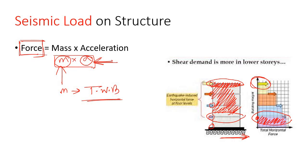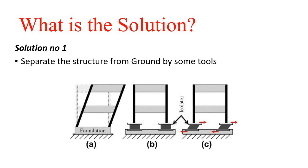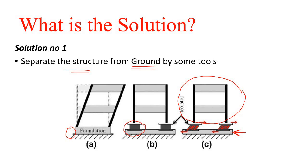Now what is the solution? Every problem is created from the ground — the ground is the source of all the problem. So the very first solution is to simply separate the structure from the ground. This can be done by installing elastomeric bearings. Once the ground starts to move, the elastomeric bearing deflects and the structure remains in its own shape with no lateral force transferred.